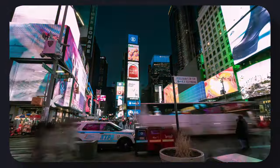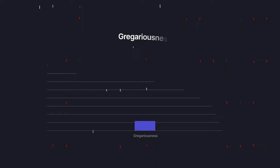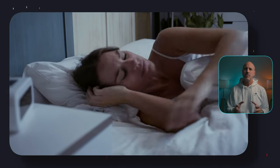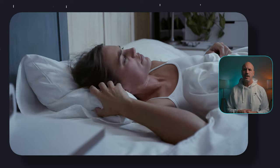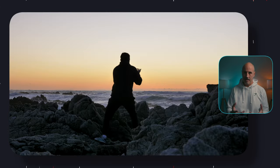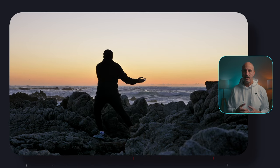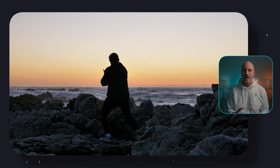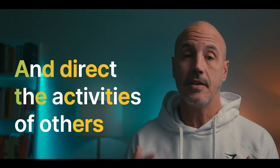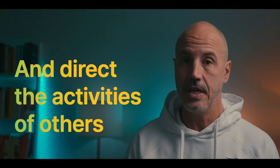Gregarious people enjoy the excitement of crowds. People that are low in gregariousness tend to feel overwhelmed by large crowds and will tend to stay away from them, but they do not dislike being with people — their need for privacy is much greater. If a person is high in assertiveness, they tend to be leaders in groups; they like to speak out, take charge, and direct the activities of others.